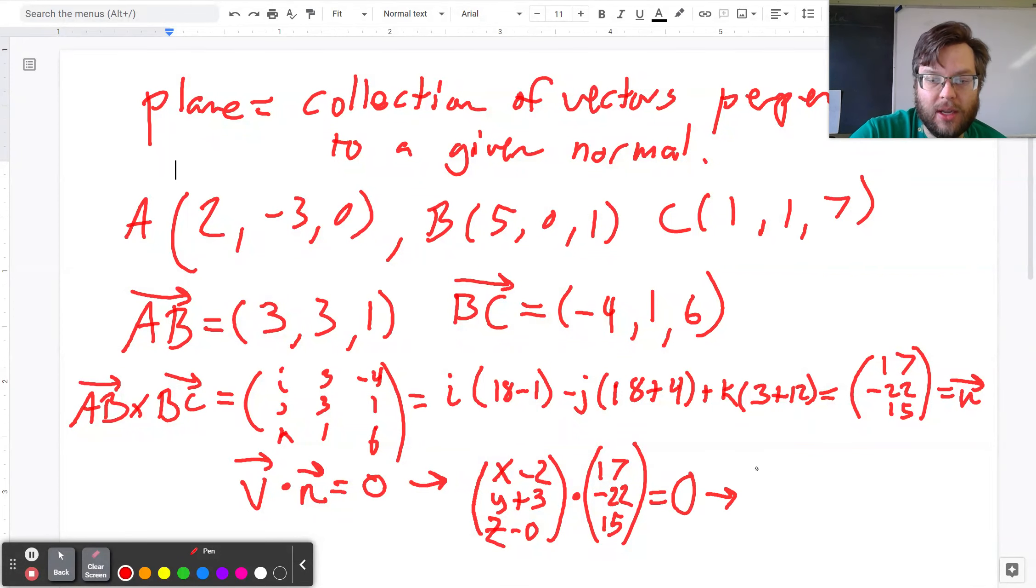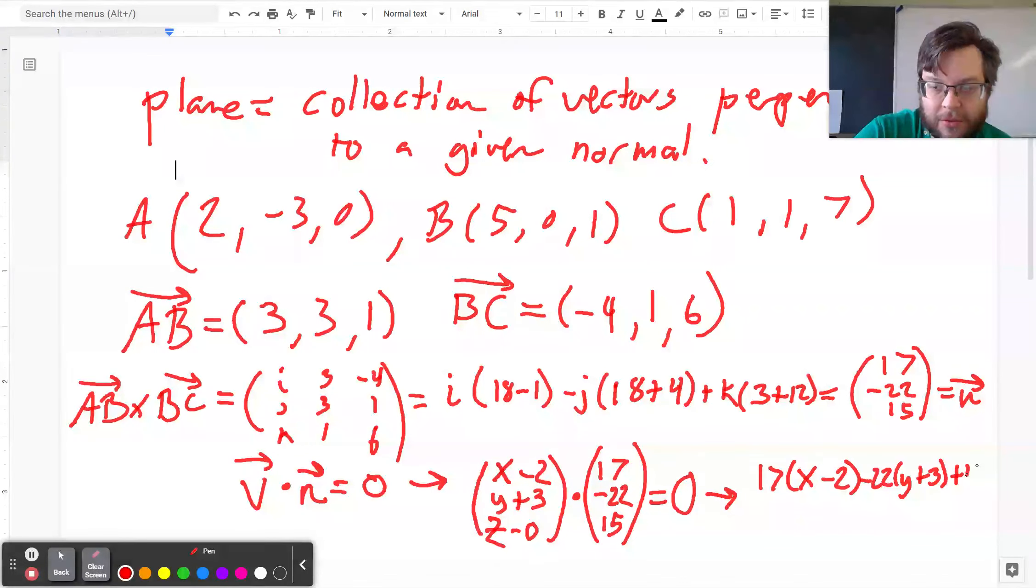Which yields this equation: 17(x - 2) - 22(y + 3) + 15z = 0.